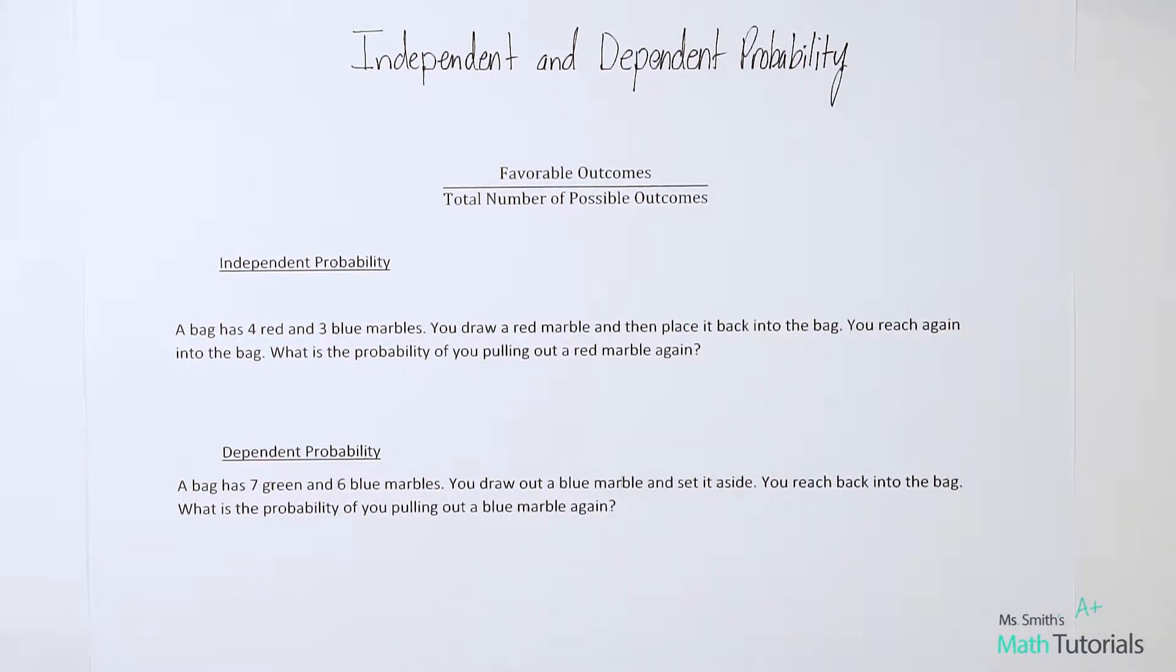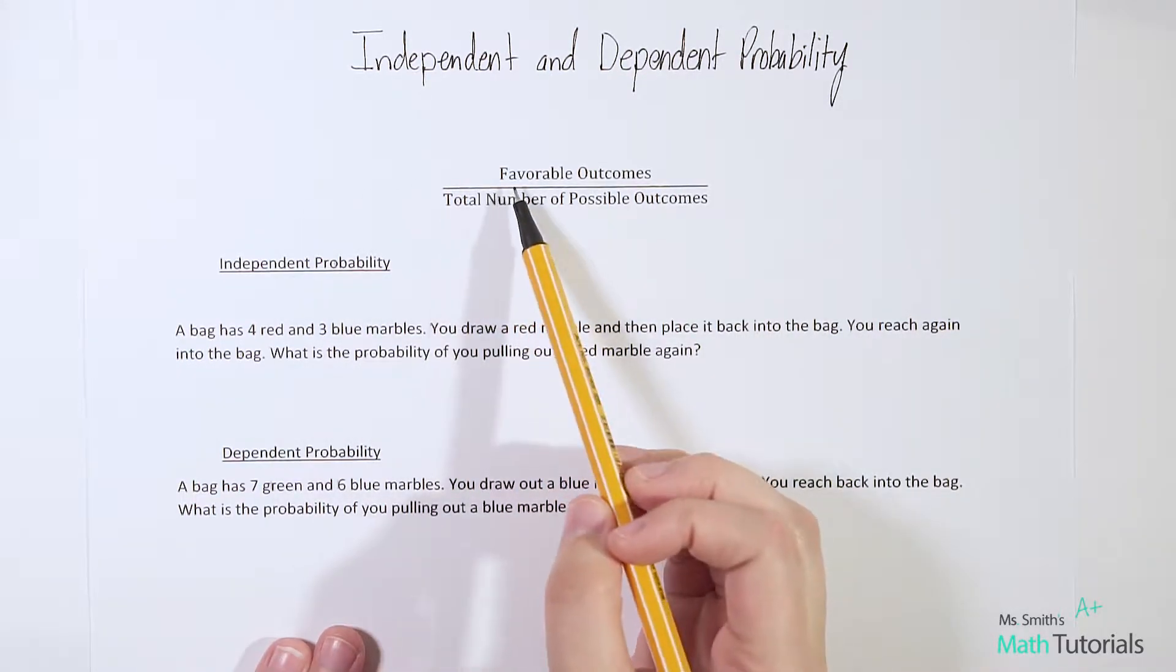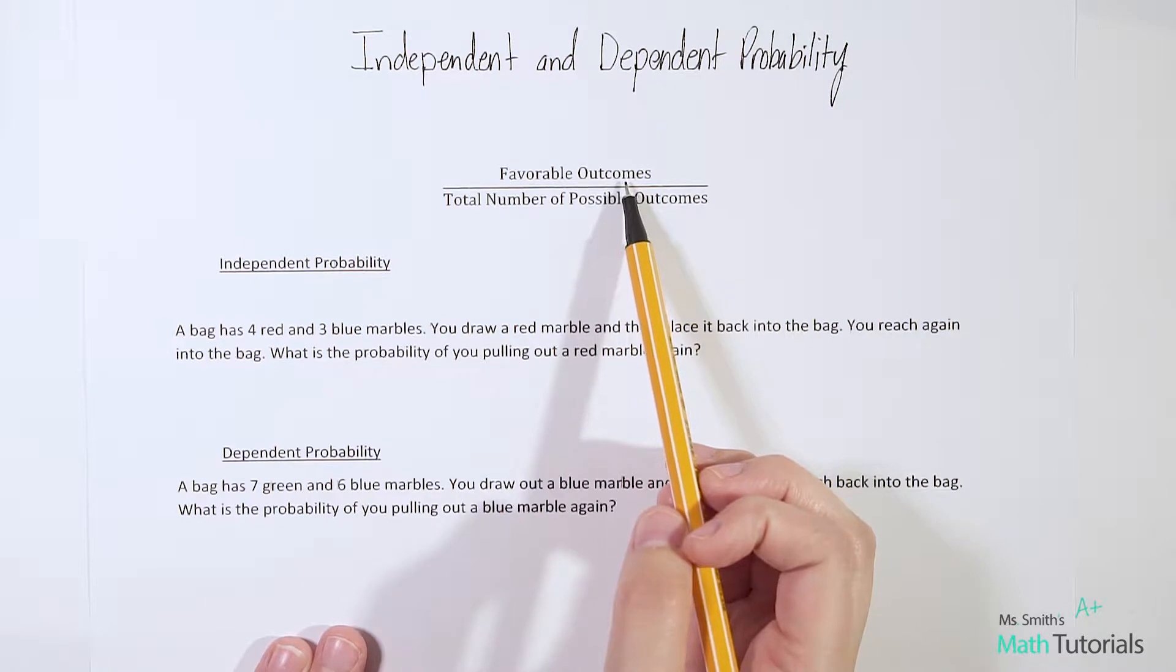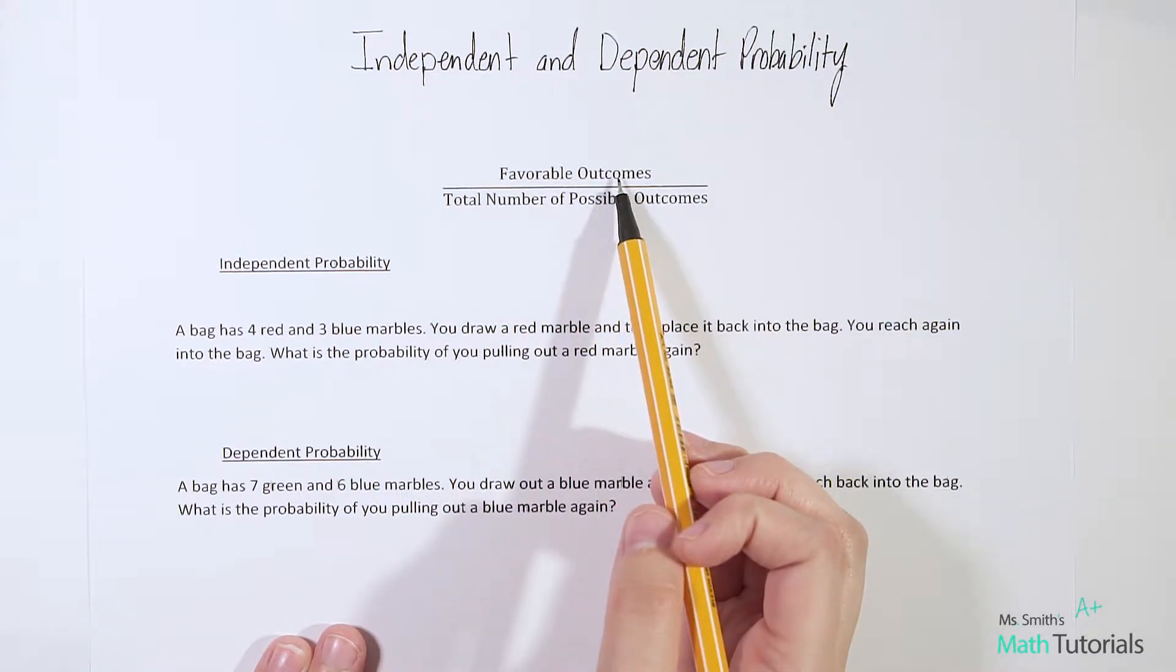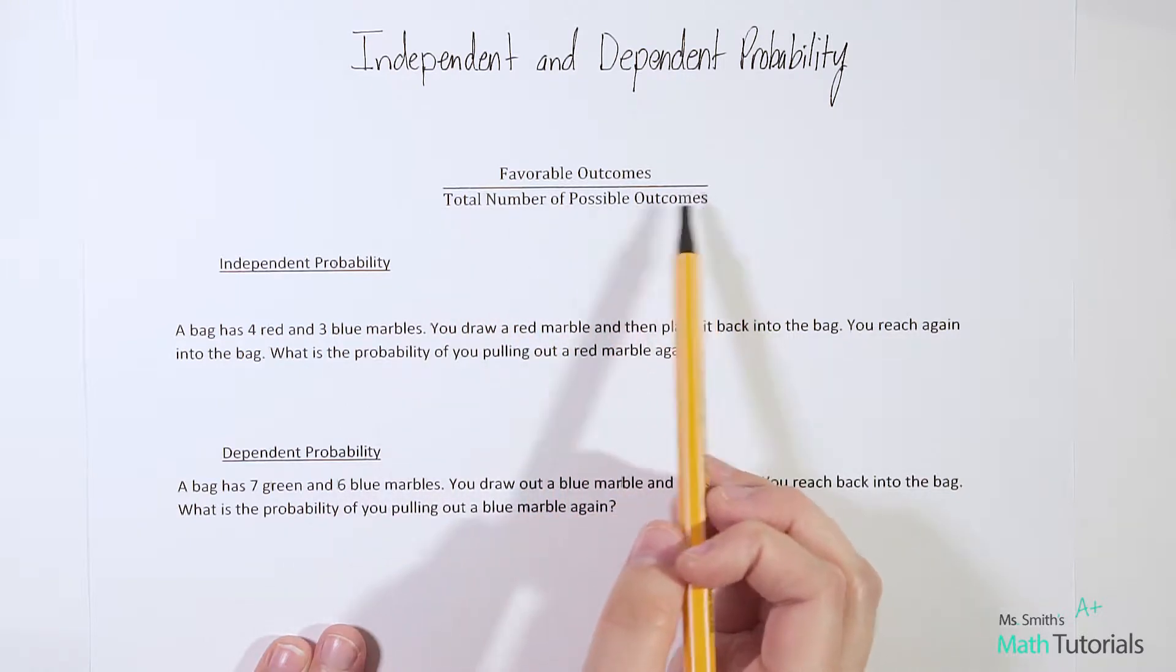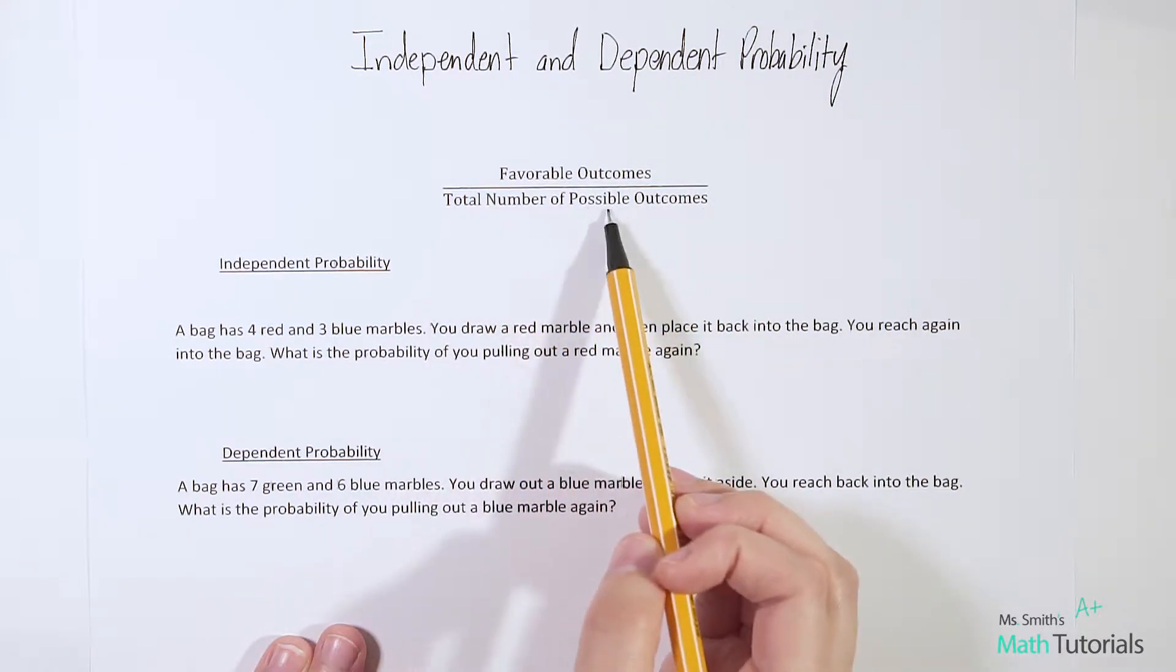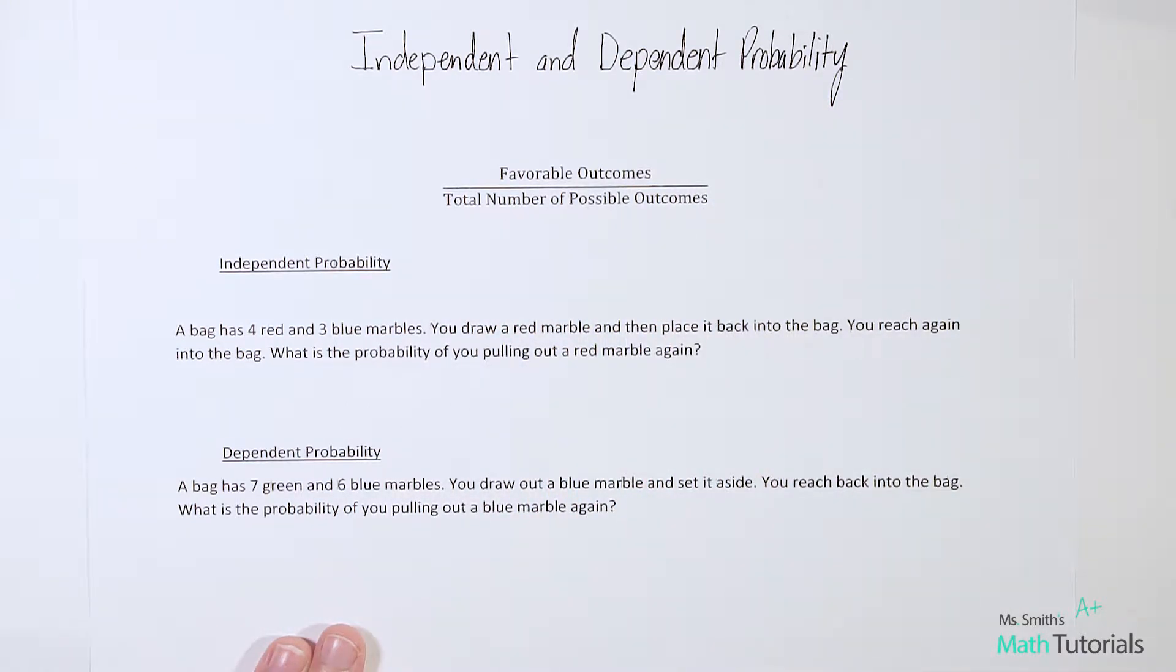The way we look at probability overall is we take the favorable outcomes, our preferred or whatever outcome we're wanting or asking for, over or divided by the total number of possible outcomes. We're going to look at one example of independent probability and one example of dependent probability. We'll talk about the differences when we get into them.